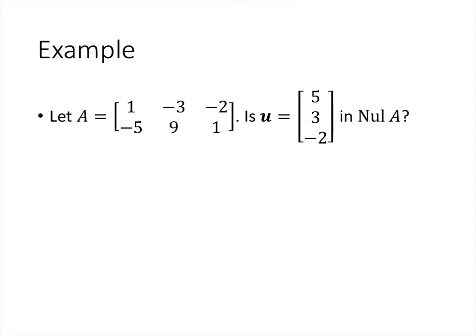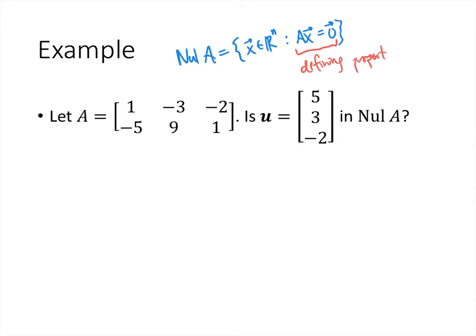Let's look at an example. If I give you a matrix A and a vector u, how can we check to see if u is in the null space of A? The null space of A is defined by the property that A times x equals 0. So we multiply A by that vector and see whether or not we get 0. If we get 0, the vector is in the null space; if we don't, it's not.